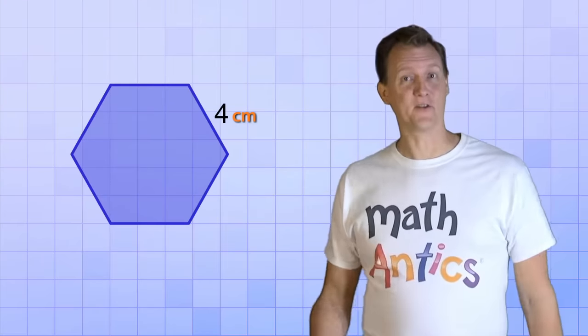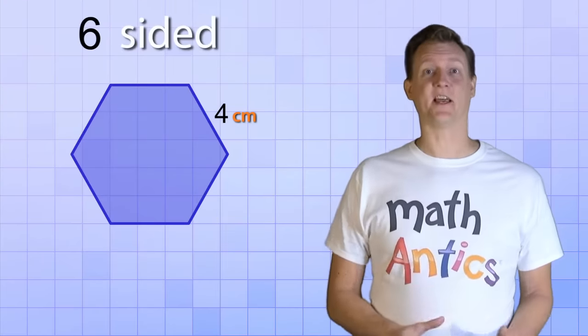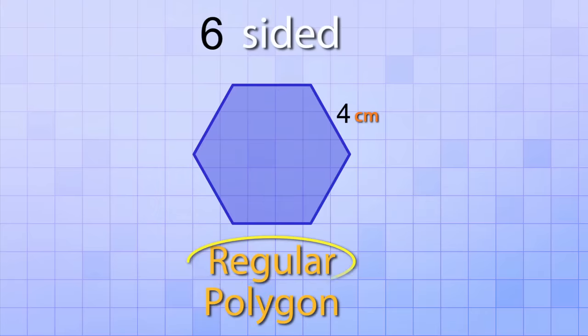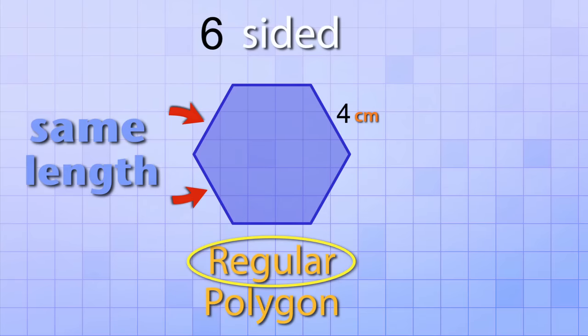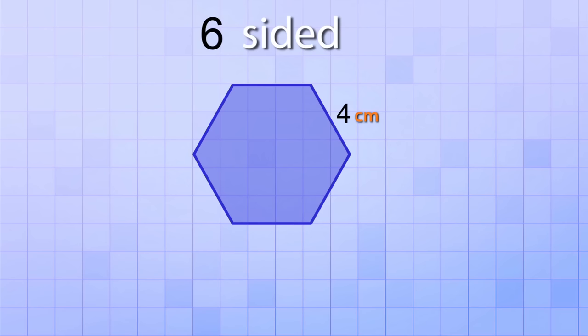Here's another good example. This is a six-sided, regular polygon. A regular polygon means that all its sides are exactly the same length. And that's good because this diagram only shows the length of one side. But since the polygon is regular, we know that all the other sides are also 4 cm long.